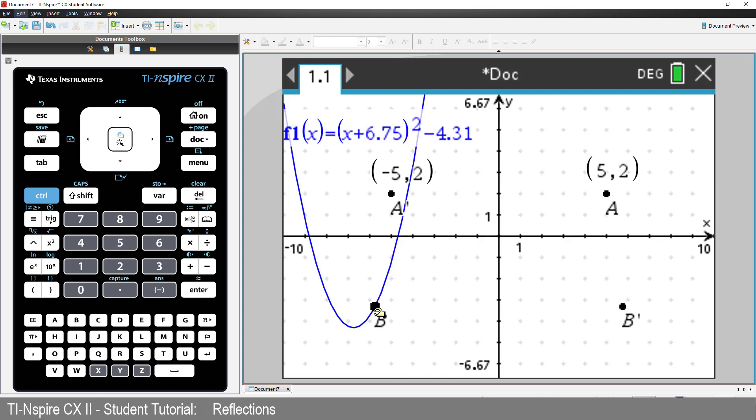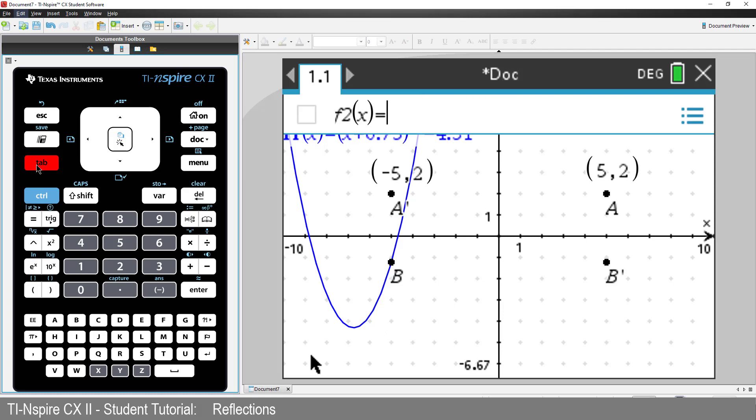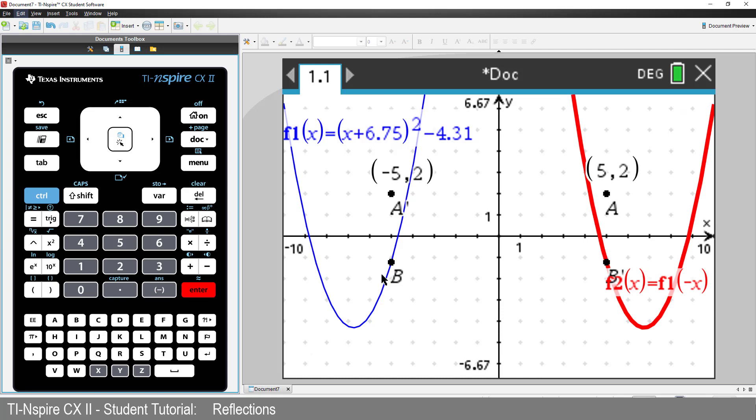Grab point B and move it along the parabola. Notice that the reflected point B-prime also moves in a parabolic path. We can use the information we learned about reflecting point A. That is, reflecting a point in the y-axis makes the abscissa or x coordinate the negative of its current value. Press Tab to navigate to the graph entry line and graph f1 of negative x. We have reflected all the points on our original graph in the y-axis.